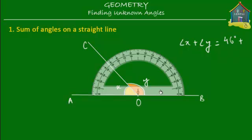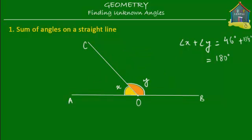How about angle Y? Angle Y is formed by lines OB and OC. I place the zero of the protractor on OB and measure. The angle Y is equal to 134 degrees. So then what is the total of these two? Well, 46 plus 134 is equal to 180 degrees. The sum of angles on a straight line is equal to 180 degrees.